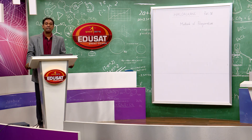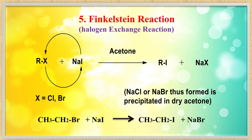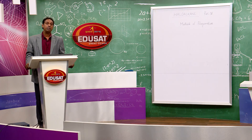Finkelstein reaction — also called halogen exchange reaction: the reactant is R-X where X = Cl or Br (chloroalkane or bromoalkane). The reagent is NaI in acetone solvent. Reaction: R-X + NaI → R-I + NaX. This converts chloroalkane or bromoalkane to iodoalkane. Example: methyl chloride + NaI (acetone) → methyl iodide + NaCl.